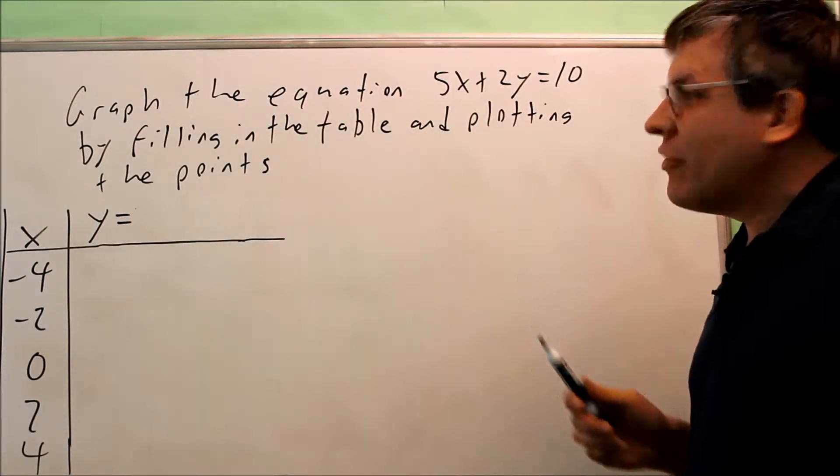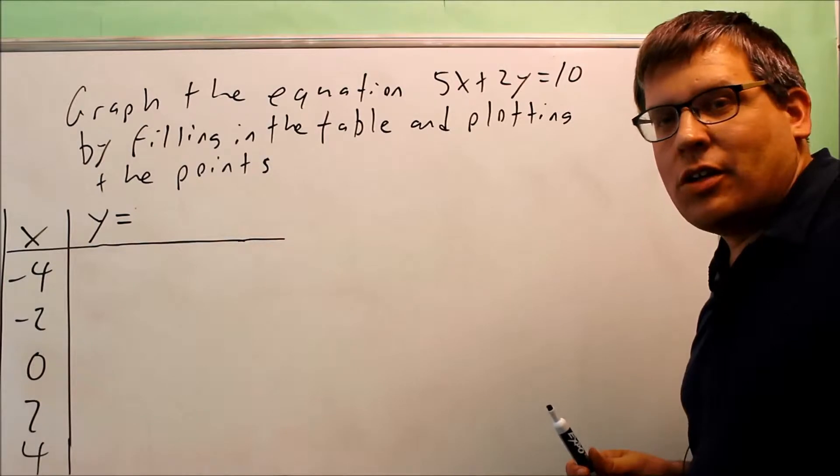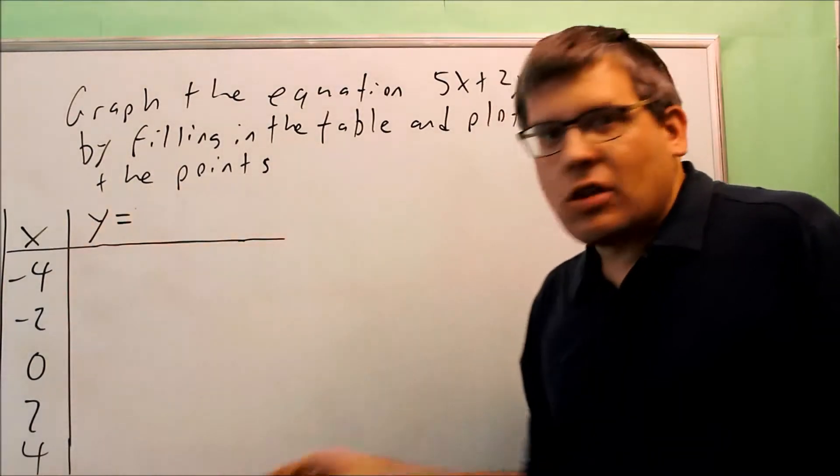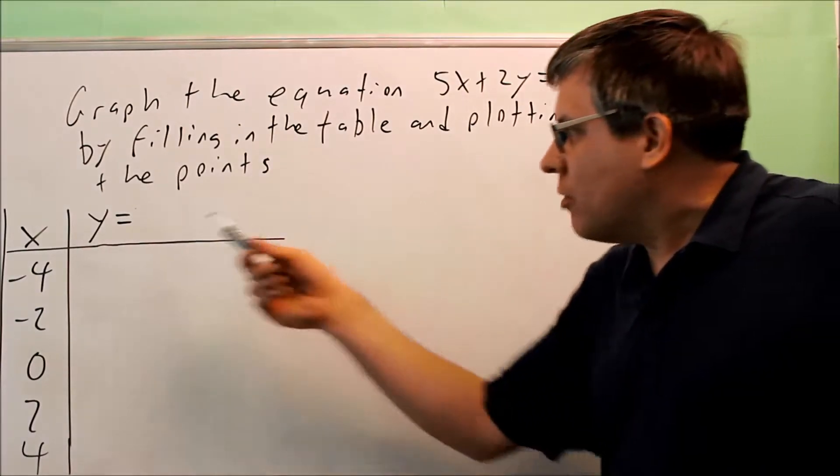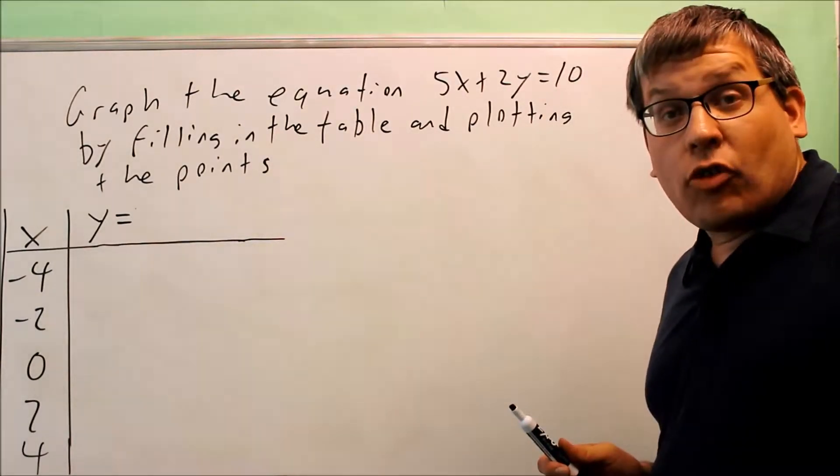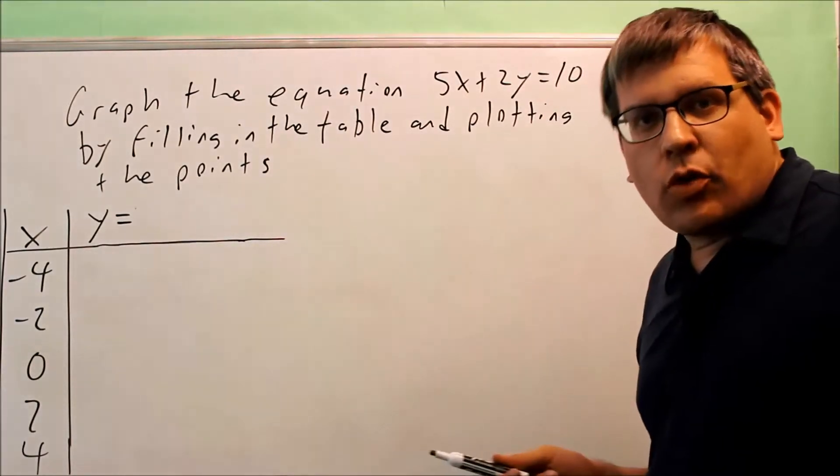We want to graph the equation 5x plus 2y equals 10 by using the table method. They give us x values to put in. We're going to plug them into the formula for y and then we get a set of points that we're going to plot.